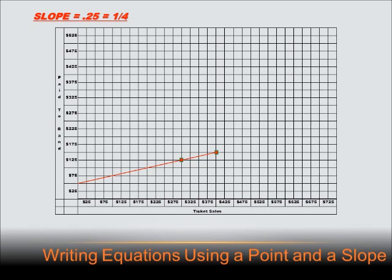So now we know the y-intercept, $50, and we know the slope, .25. Can we write the equation? Sure we can, y equals .25x plus $50.